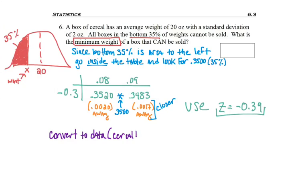And now I need to convert that to data, which will be cereal box weight for us. I'm using the formula X equals μ plus z times σ, or the average plus the standard deviation times the number of standard deviations away.